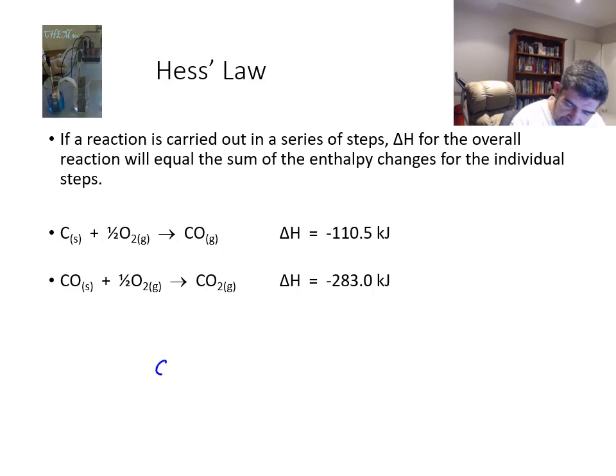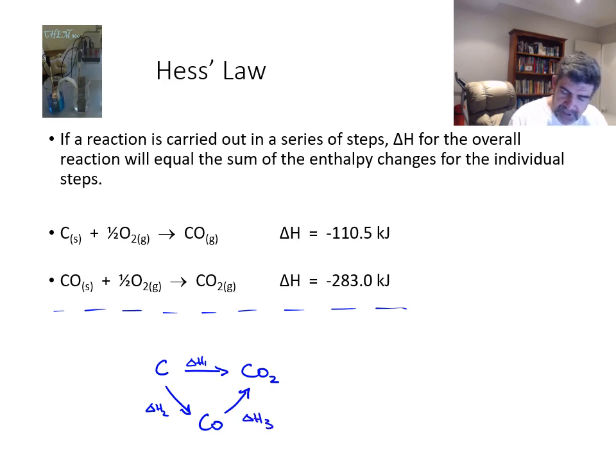So if we take carbon as our initial, and we say we want to form carbon dioxide, but we can also form carbon monoxide, which we can then turn into carbon dioxide, then what we can effectively do is add these two processes together. In the example I had before, this was delta H1, this is delta H2, and this is delta H3. So consider that we have delta H2, delta H2 is our carbon plus a half O2 gives us CO, and delta H3 is CO plus a half O2 gives CO2.